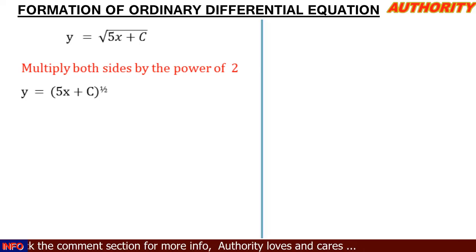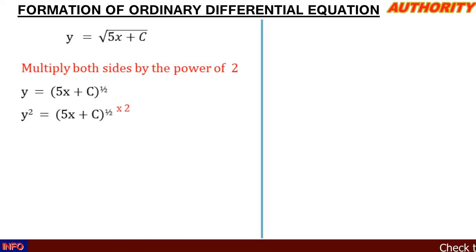So when we multiply by the power of 2, we have on the left-hand side y squared, that is power of 2, equals 5x plus C in bracket raised to power 1 over 2 multiplied by 2. So this square root will go.